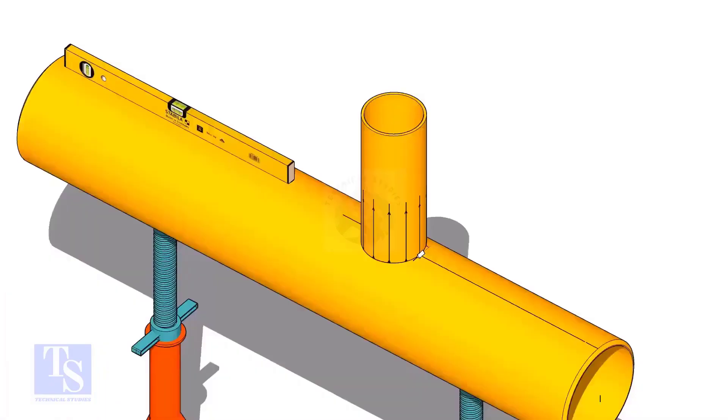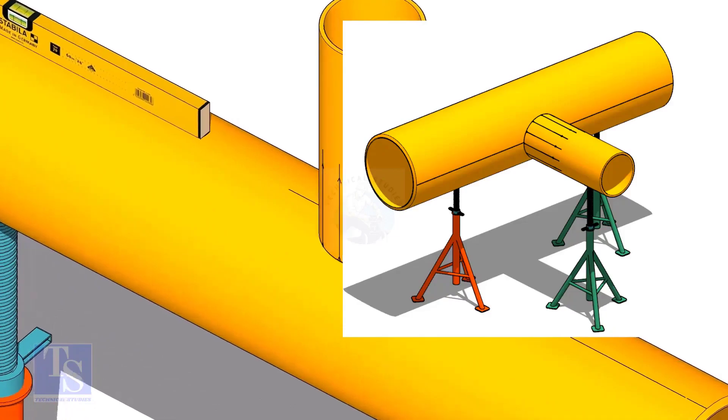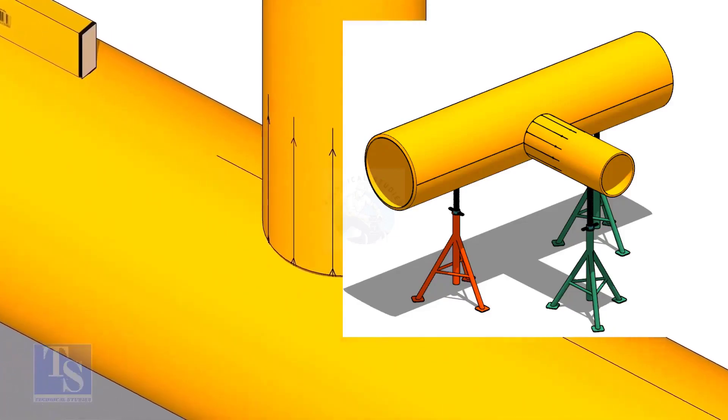Tack weld the branch on the header, just to stand it vertically. If the pipes are large, you can do it in the horizontal position also.